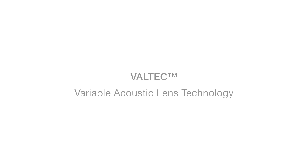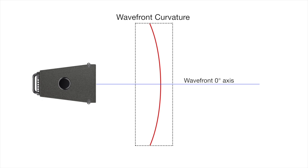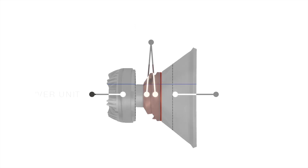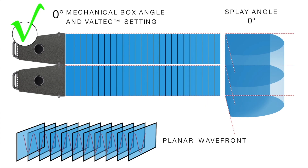With VELTECH — Variable Acoustic Lens Technology — for the first time it is possible to adjust the vertical dispersion angle of the individual element. For this purpose, the wavefront is more or less curved by two adjustable lens segments, whereby even a completely plain wavefront is possible. Zero degrees vertical dispersion.